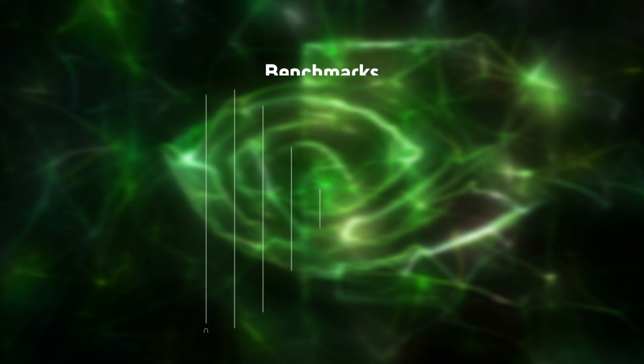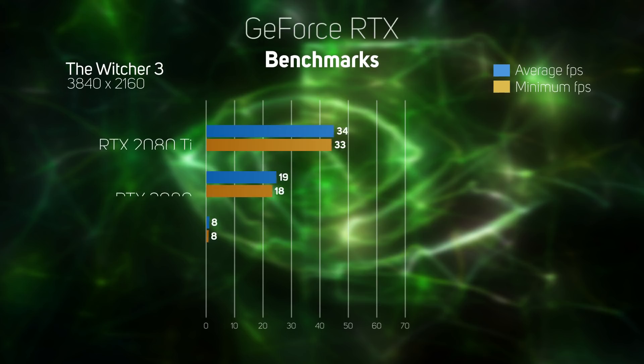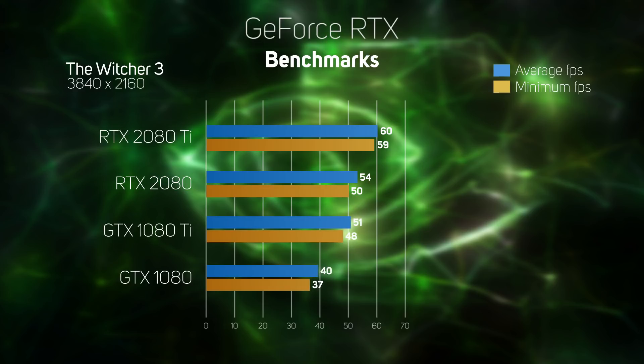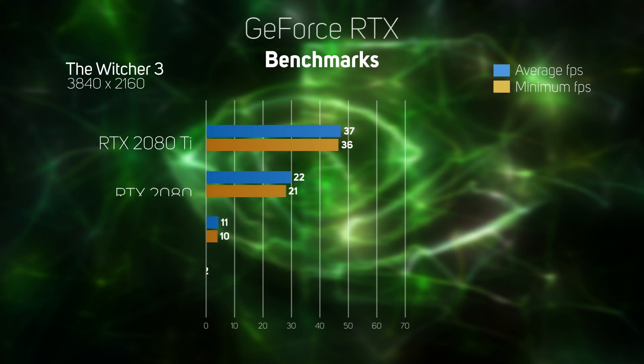The Witcher 3 is the oldest game we benchmarked, but it's still very popular. The GTX 1080 struggled at 4K in this game, with the GTX 1080 Ti and RTX 2080 giving almost identical frame rates, just 2-3 frames per second apart. The RTX 2080 Ti managed pole position again, but was only 22% faster than the GTX 1080 Ti — the smallest performance difference we saw in any game from the new cards.